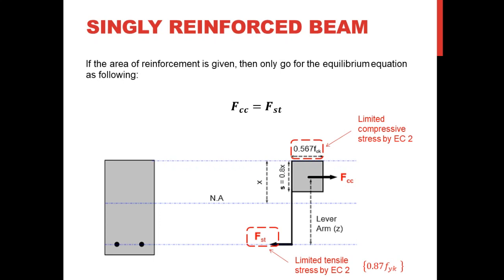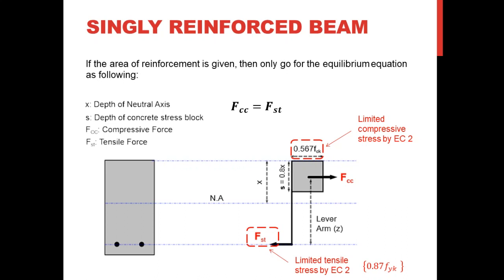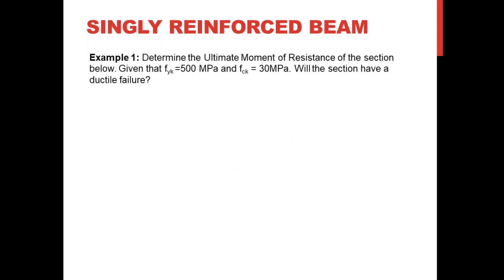For the steel, the limit is 0.87fyk, which is the yield strength of the steel. x is the depth of the neutral axis and s is the depth of the concrete stress block, limited to 0.8x — we don't take the entire depth. You should also know that capital F refers to a force, while small f refers to a stress.